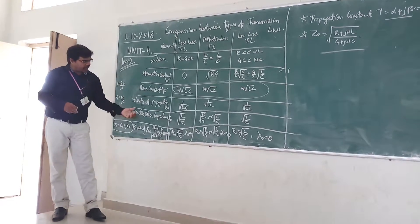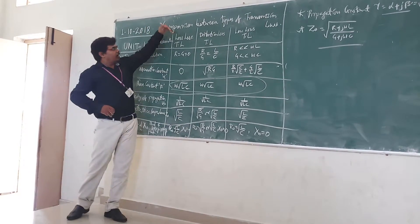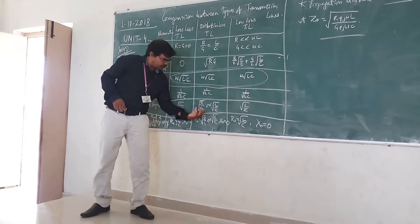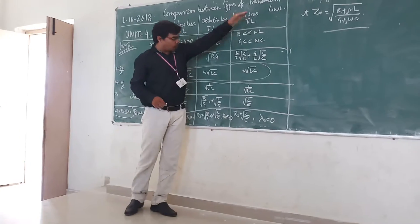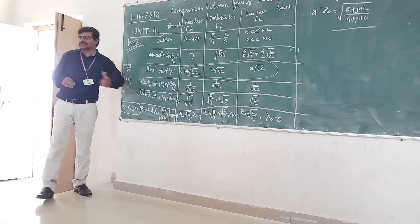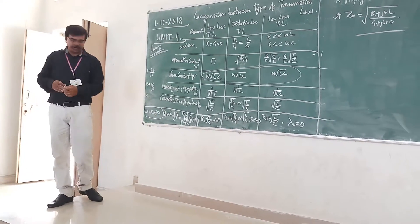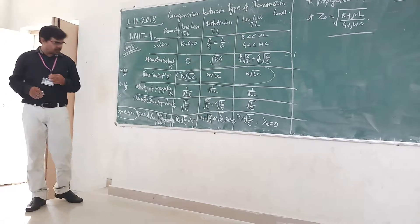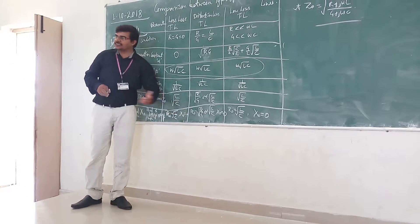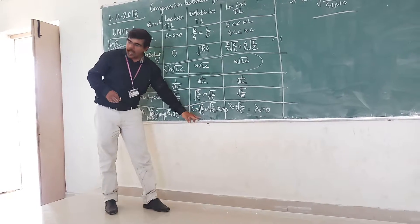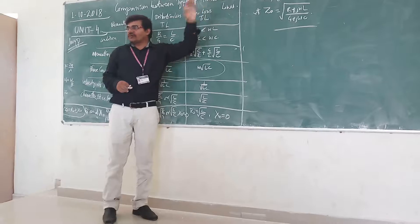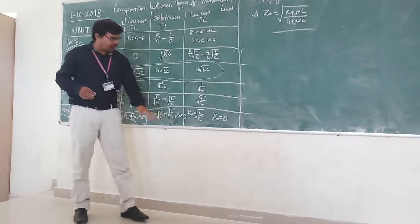The characteristic impedance Z naught is square root of L by C for lossless. For distortionless it is square root of L by C or square root of R by G — either can be used. For low loss it is square root of L by C. Z naught equals R naught plus J X naught. For lossless, R naught is square root of L by C and X naught is 0. For distortionless, R naught is square root of R by G or square root of L by C and X naught is 0. For low loss, R naught is square root of L by C and X naught is 0.